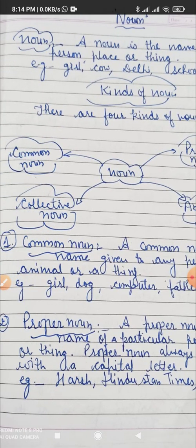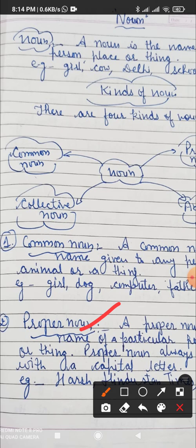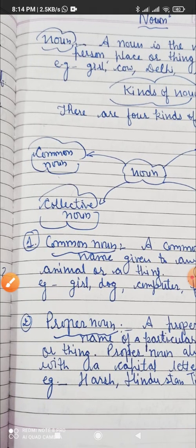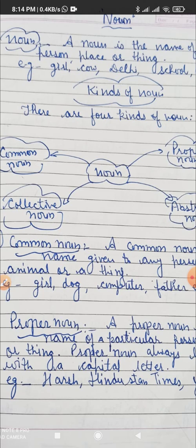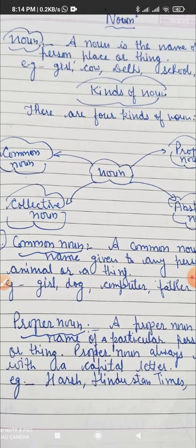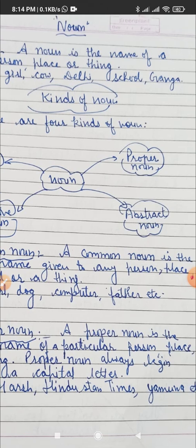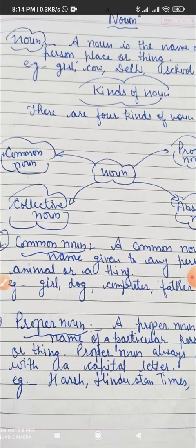Now the second one is proper noun. A proper noun is the name of a particular person, place, or a thing. Proper noun always begins with a capital letter. Like Harsh — Harsh is a name given to a particular person. Yamuna, Ganga, Delhi, Sonipat, Panipat, Sita, Gita — these are known as proper nouns.